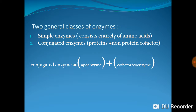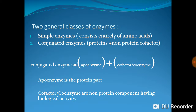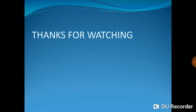Conjugated enzymes consist of two parts: the apoenzyme, which is the protein part, and the cofactor or coenzyme, which is the non-protein component. The cofactor or coenzyme has biological activity, while the apoenzyme alone is biologically inactive.